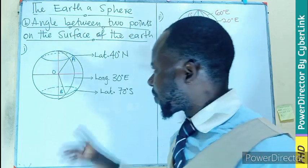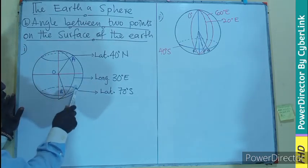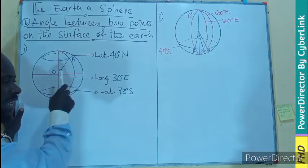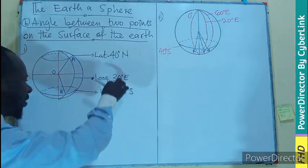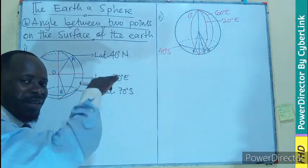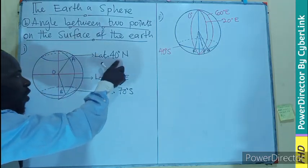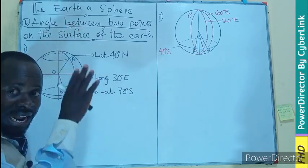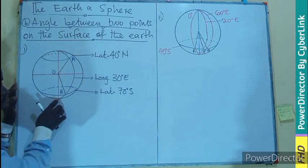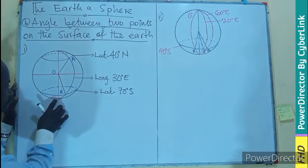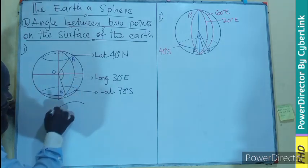Looking at the diagram, the blue lines represent small circles, and those small circles are latitudes. Point B is on latitude 70 degrees south, and point A is on latitude 40 degrees north. They are on different latitudes, but they share a common longitude — longitude 30 degrees east. Moving along that longitude, we meet B and then A. We want to find the angle here, which is going to form a sector.